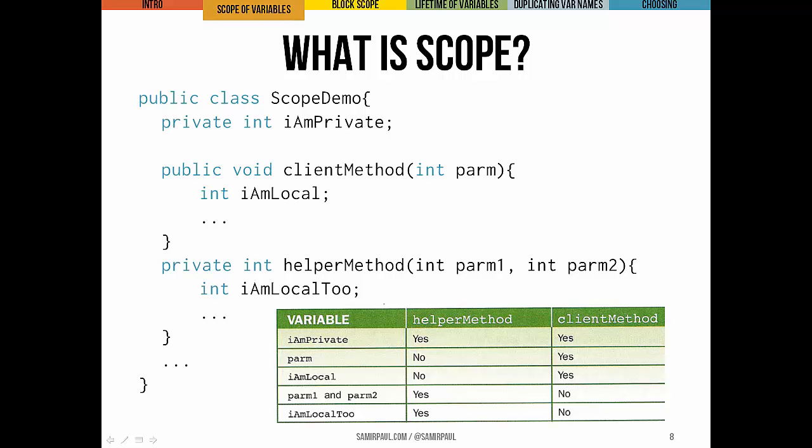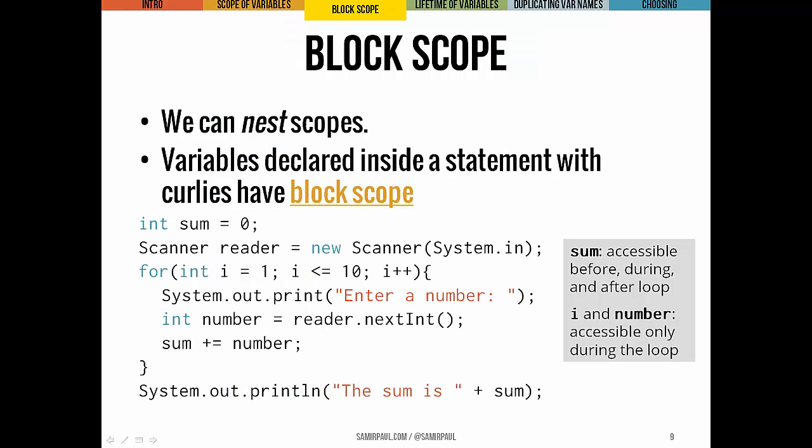In this example, there are different levels of scope. The private instance variable `iAmPrivate` is accessible in either of the two methods — client method and helper method. Meanwhile, the parameters and local variables declared in each method are only accessible inside that method; they're not accessible in the other. A method's code can also have nested scope: any variable declared inside a compound statement with curly braces has block scope and is only visible within the code enclosed by those braces.